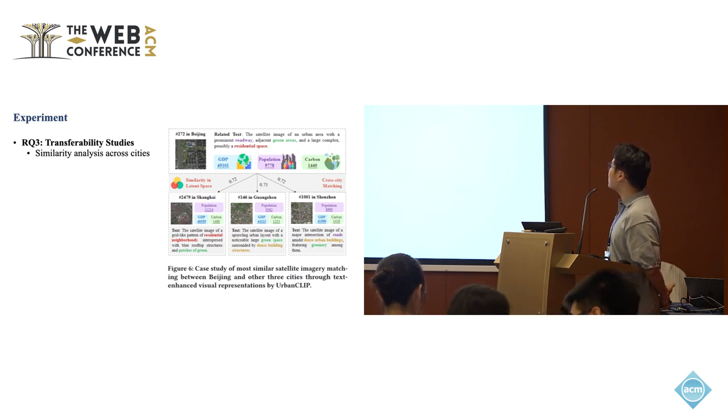Basically you have some image from any other cities as querying, and then you calculate the similarity and then you pick up the image from any other three cities with the highest image similarity.